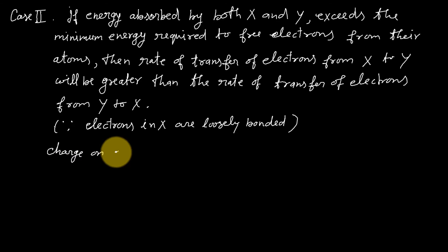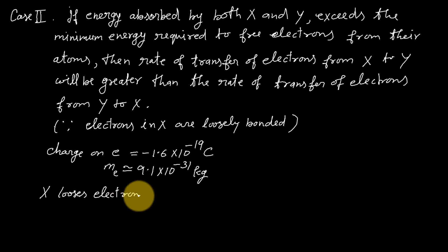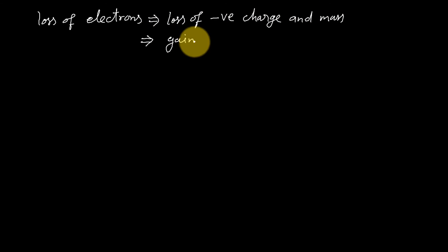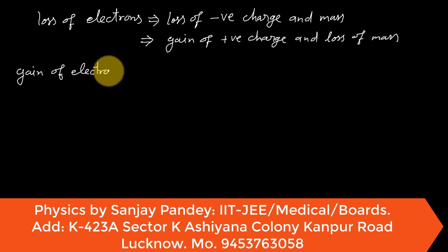Electrons are negatively charged particles. Each electron has charge minus 1.6 into 10 to the power minus 19 coulomb and mass 9.1 into 10 to the power minus 31 kg approximately. So in all above cases, X loses electrons and its mass and becomes positively charged, and Y gains electrons and hence mass and becomes negatively charged. Here, loss of electrons implies loss of negative charge and mass. This implies gain of positive charge and loss of mass. Gain of electron implies gain of negative charge and gain of mass.